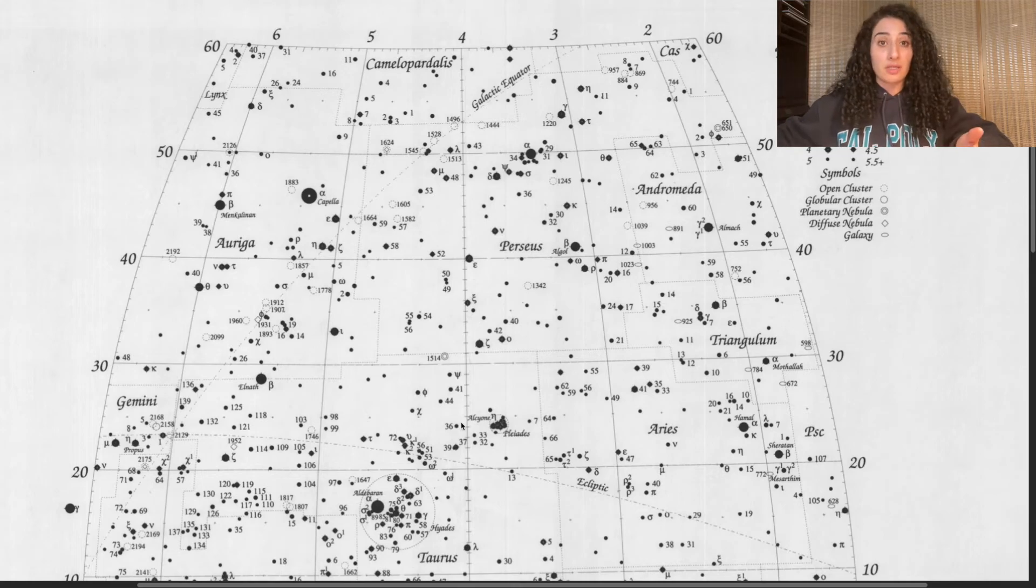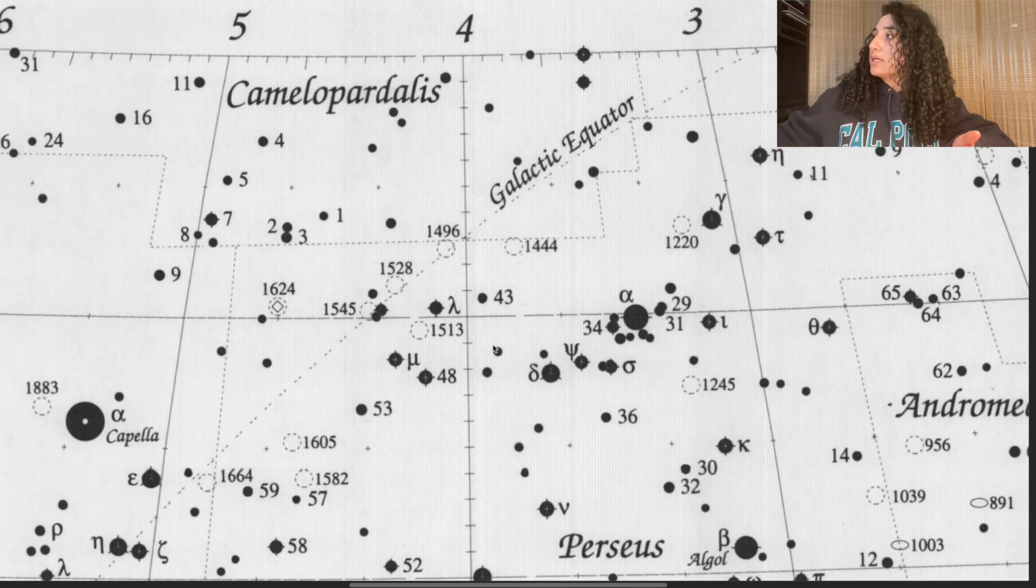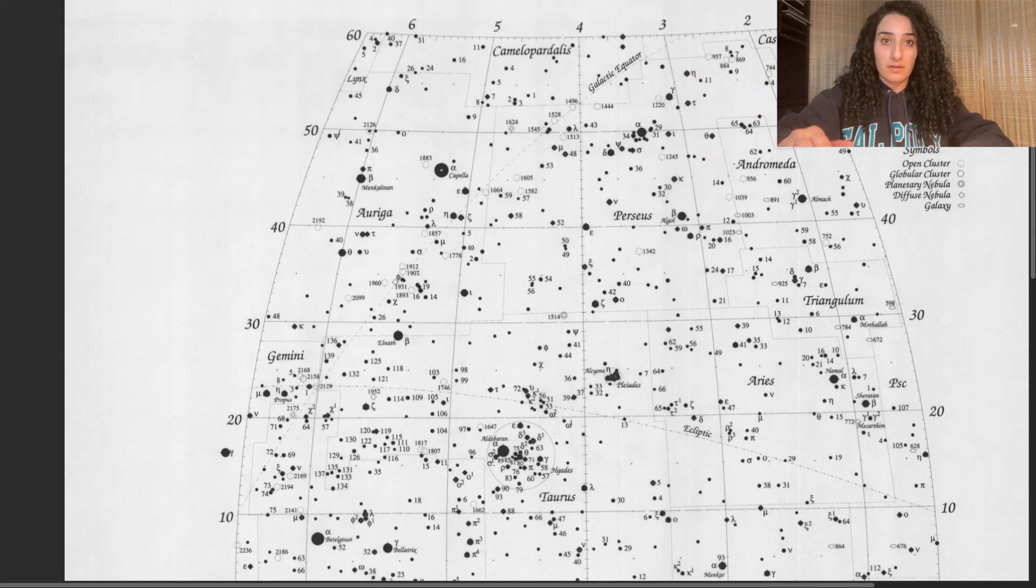So it might not be easy to notice them right away, but the galactic equator is labeled right up here at the top of the map, and it is represented by that double dotted dashed line that curves from the top right to the bottom left slash middle of the map.